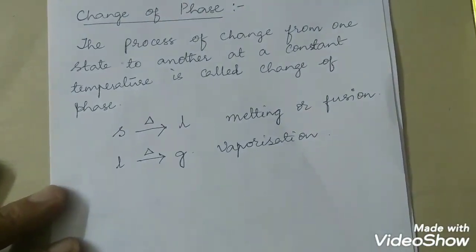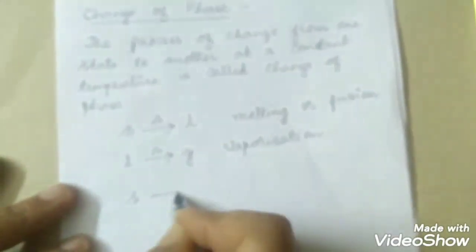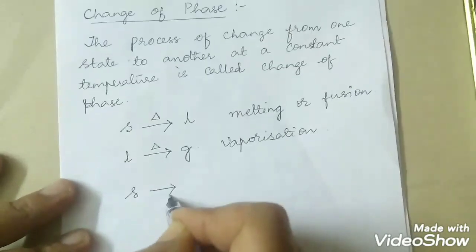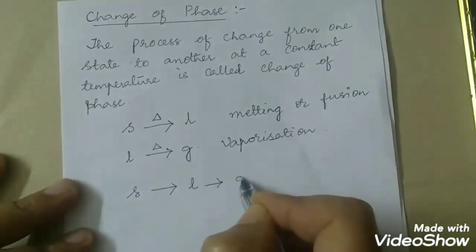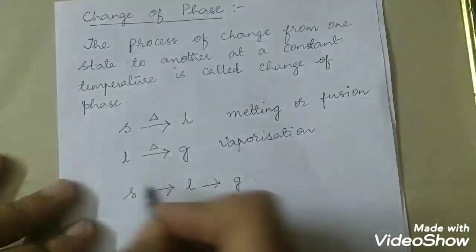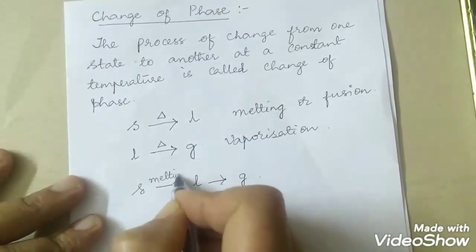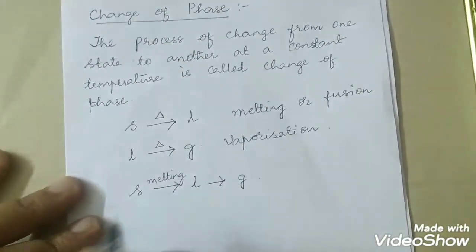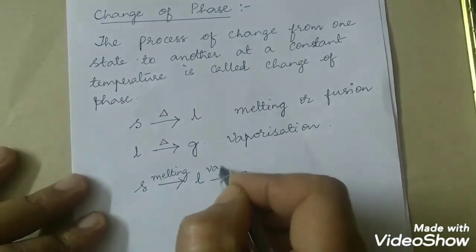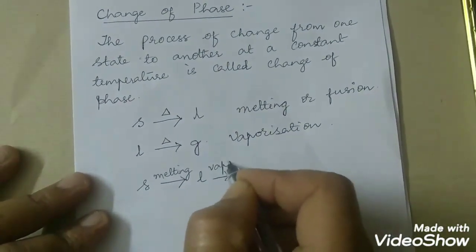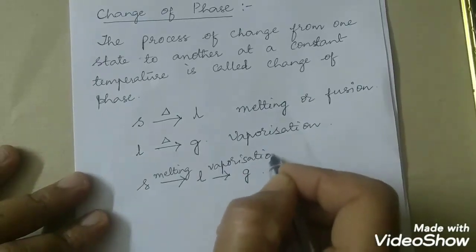All these things can be written like this: solid, liquid, gas. Solid on melting changes to liquid; liquid on vaporization changes to gas.